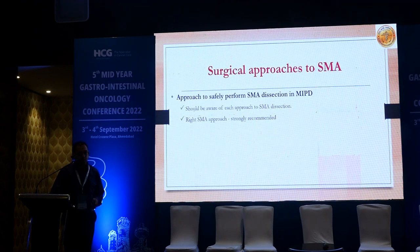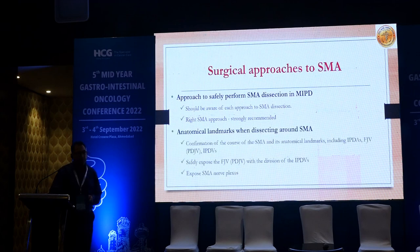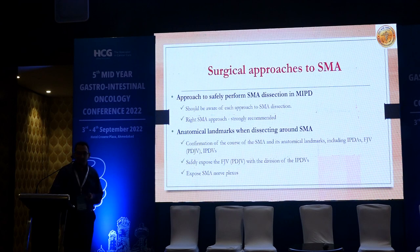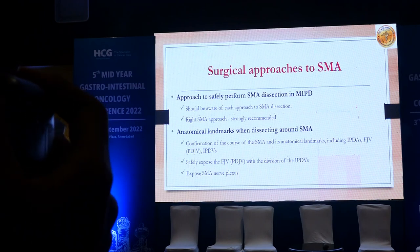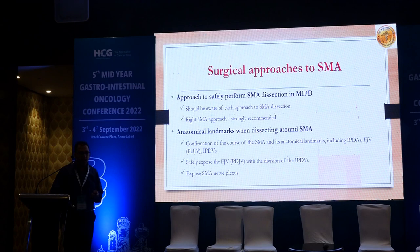To safely perform SMA dissection in MIPD, you should be aware of each approach. There are various approaches to the SMA, and the anatomical landmarks you should know include the inferior pancreaticoduodenal artery, the first jejunal vein, and the first jejunal inferior PD vein. You have to safely expose the first jejunal vein and all its branches, and expose the SMA nerve plexus.